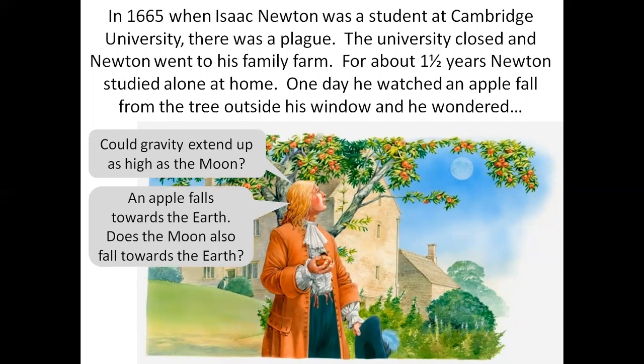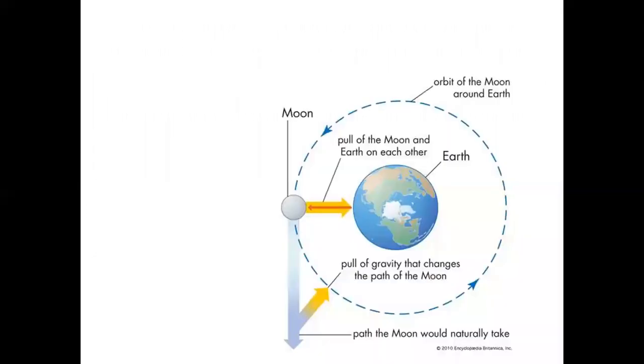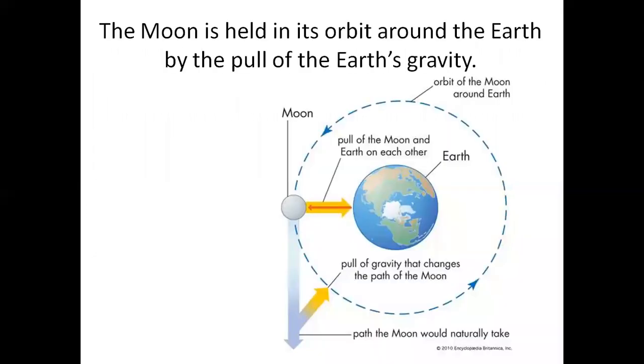An apple falls towards the earth. Does the moon also fall towards the earth? Could gravity be keeping the moon in her orbit? The moon is held in its orbit around the earth by the pull of earth's gravity. This is the path the moon would naturally take.